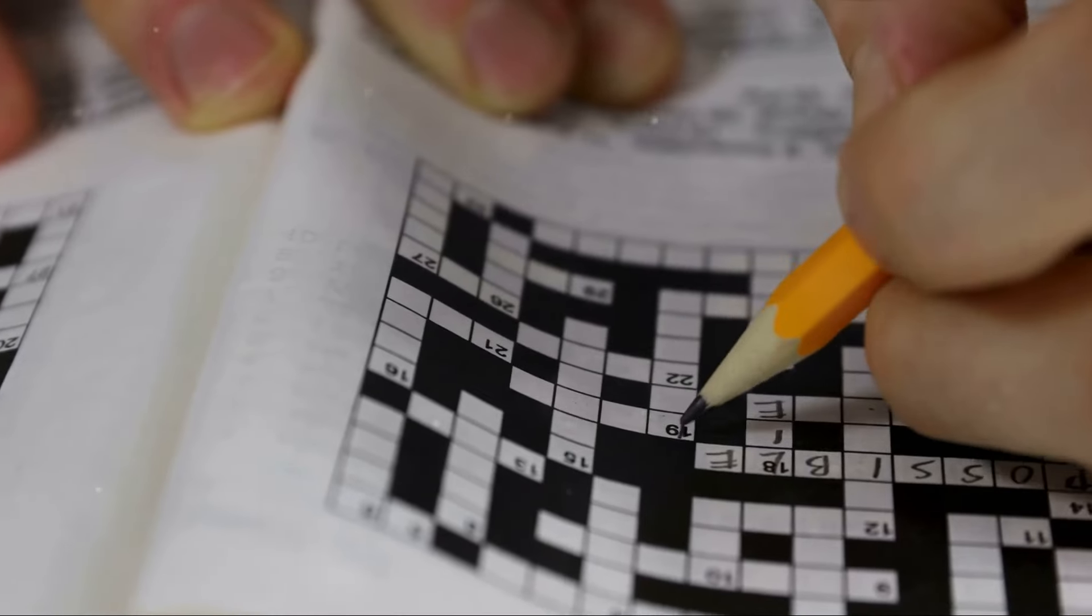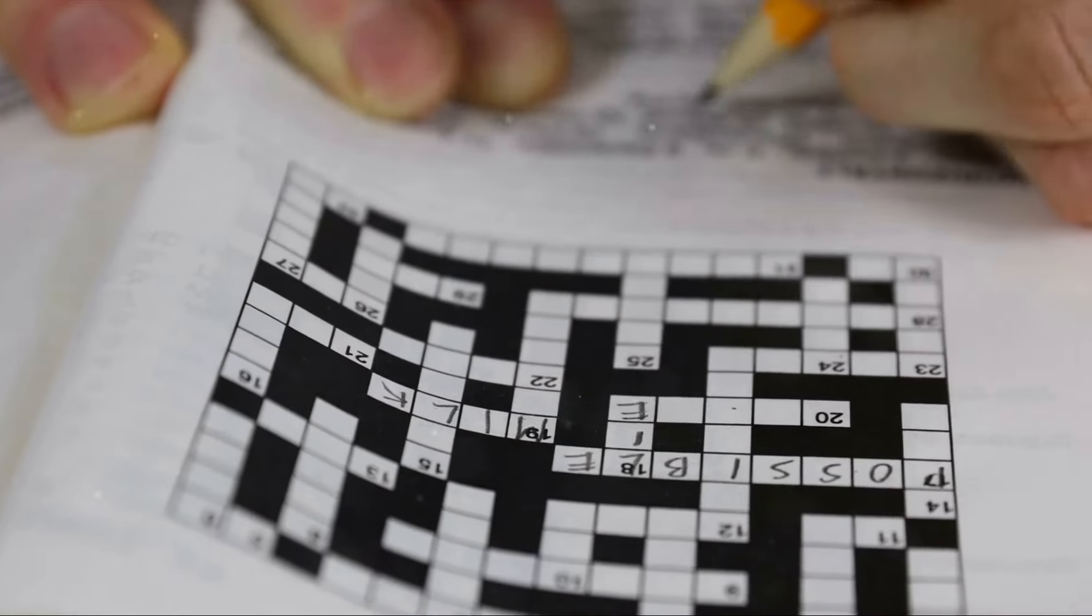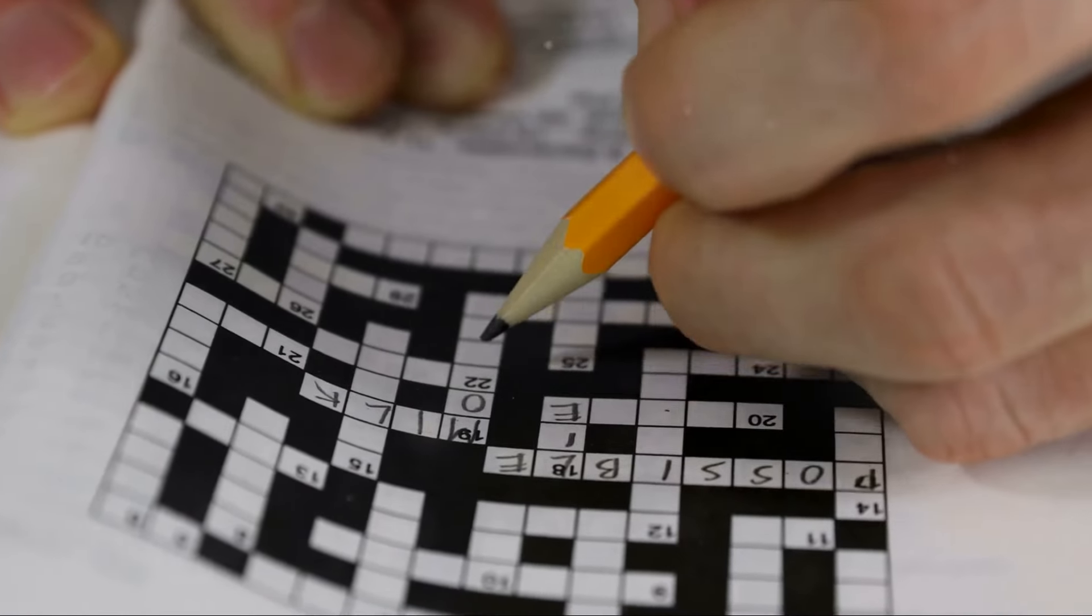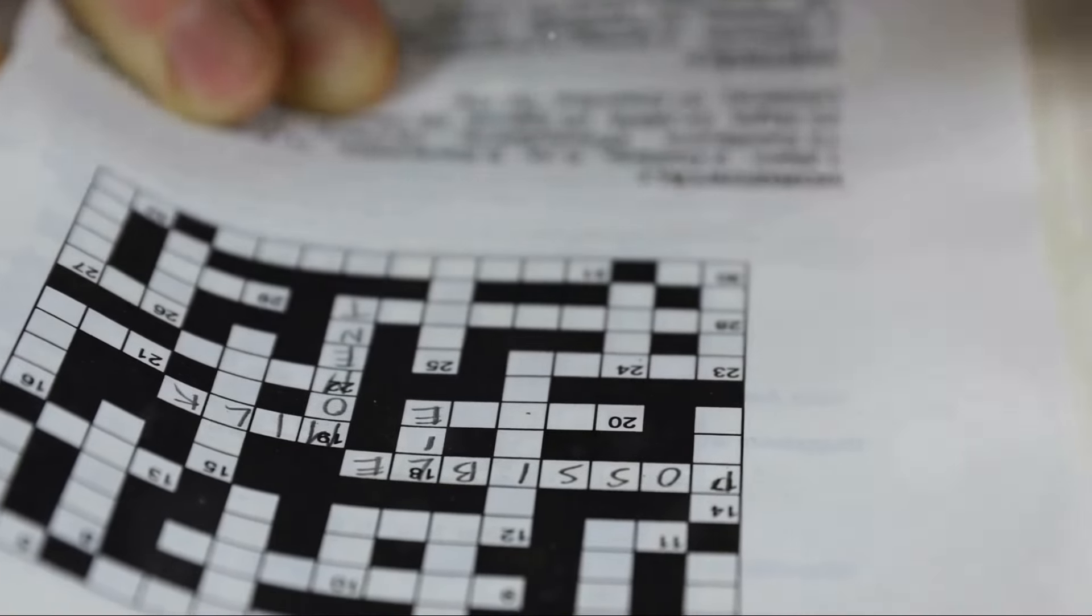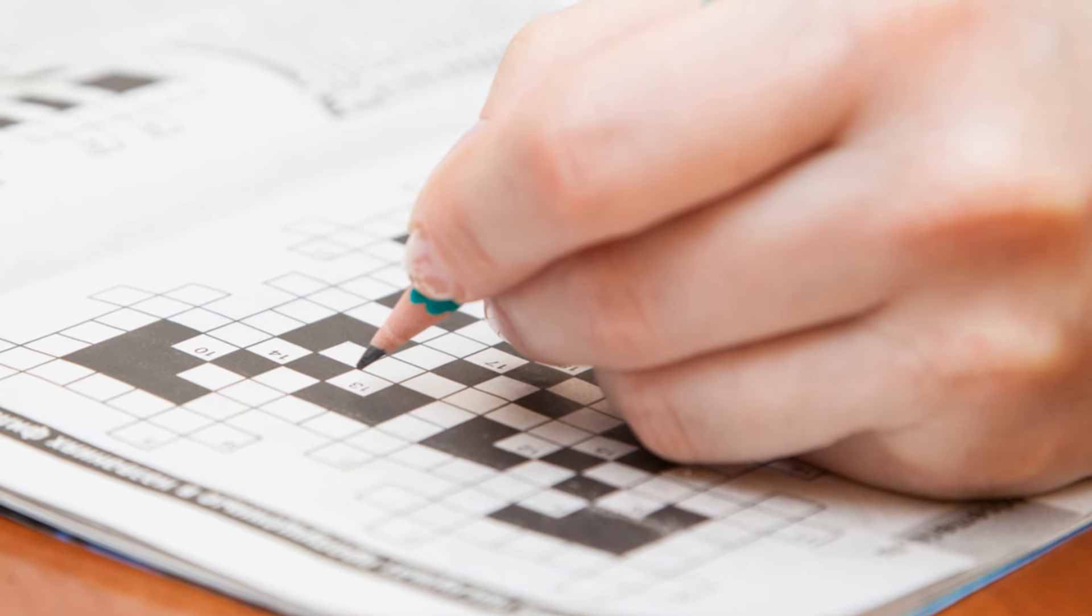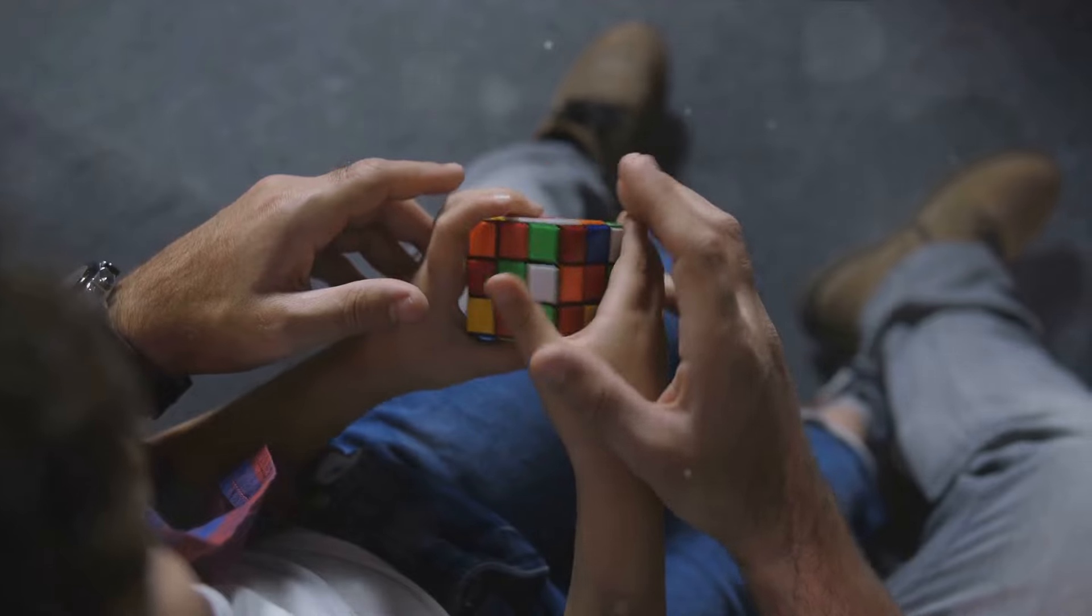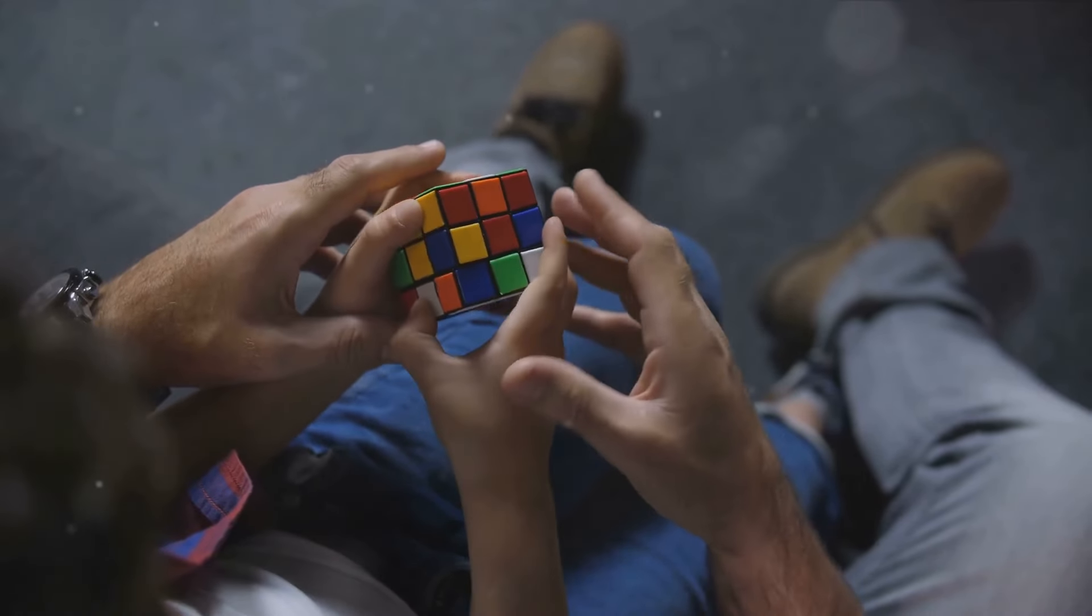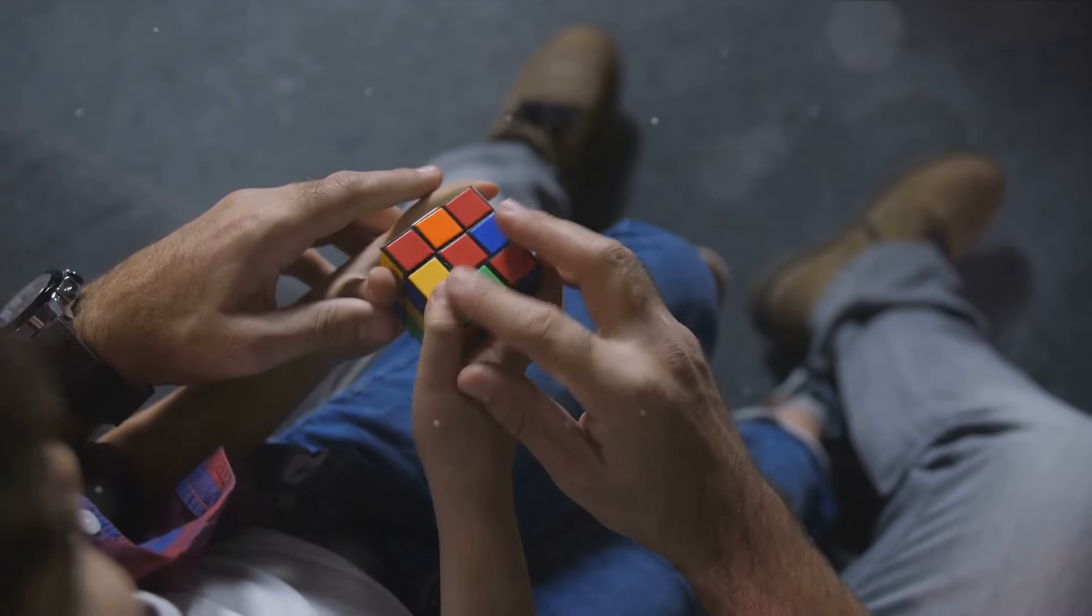Sheldrake's theory proposes a fascinating concept. As people across the world successfully fill out their crossword puzzles, these achievements resonate through what he calls a cultural morphic field. Imagine it as a vast, invisible network humming with the collective intellectual triumphs of the day. So, when you sit down with your crossword in the evening, you might be tapping into the successes of countless others, making your task seem somewhat easier.